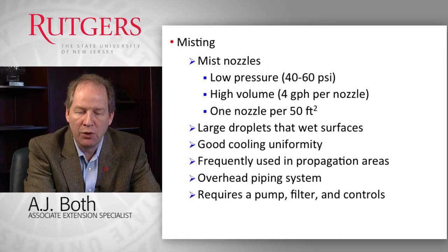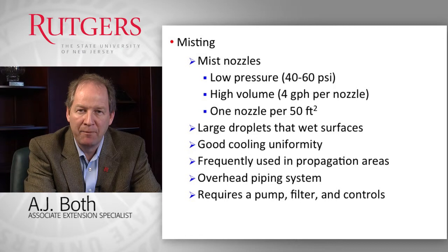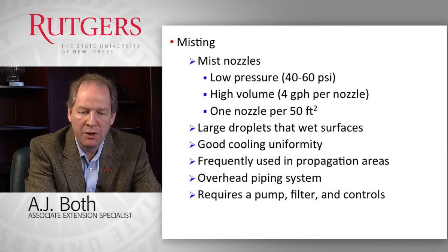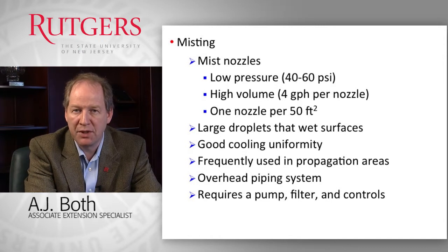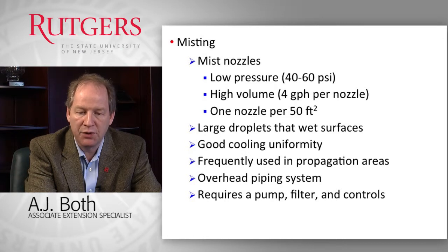Misting systems provide pretty good cooling uniformity — perhaps better than the evaporative cooling pad — because we can put those nozzles throughout the greenhouse environment. In the pad and fan system, the pad is installed on one side of the greenhouse, and although the cooling efficiency is good, as air moves through the greenhouse it picks up heat energy and heats up, creating some non-uniformity of cooling distribution. We typically deliver water through an overhead piping system, which requires a pump, filters to prevent clogging, and controls to operate the system.